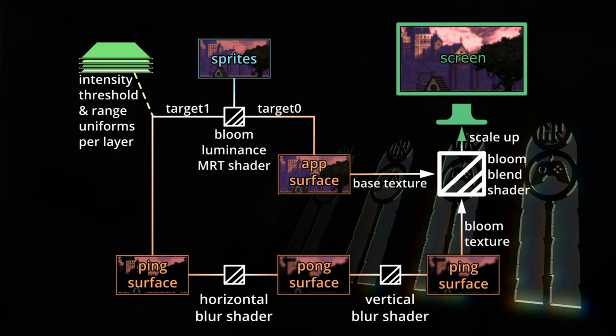Once the bloom luminance is drawn to the pink surface we proceed as before: blur the pink surface horizontally to the pong surface, then vertically back to the pink surface, and finally use pretty much the same shader as in the first bloom video to combine those two surfaces and draw the bloomed image to the screen. Really only the first part of this schematic is new — everything else we did before in the blur and bloom videos.